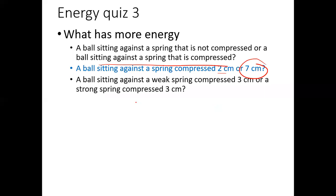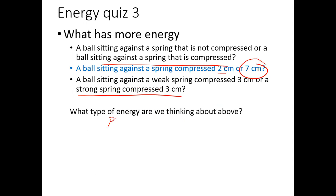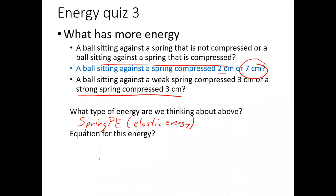If we compress it the same amount but have a strong spring in one launcher and a weak spring in the other, the strong spring is going to give it more energy. We're talking about spring potential energy, also called elastic energy. The equation is one half k delta x squared, where delta x is measured relative to the rest position of the spring. You can either compress it or stretch it — both give additional energy.